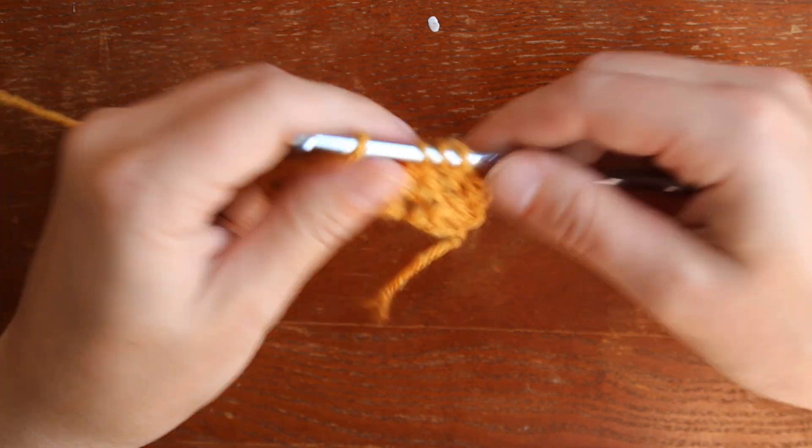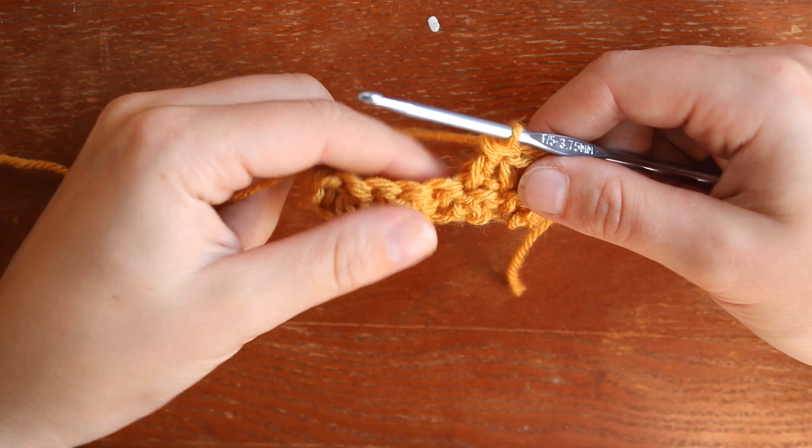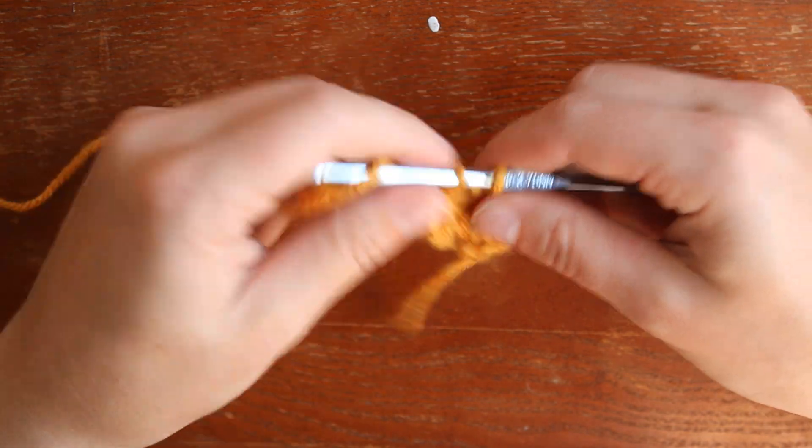This is a super easy stitch. It just is a single crochet, then a double crochet. Once you get to the end, you chain one and you repeat.